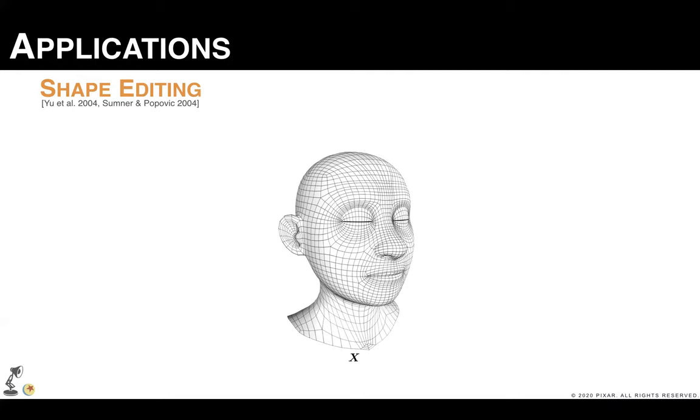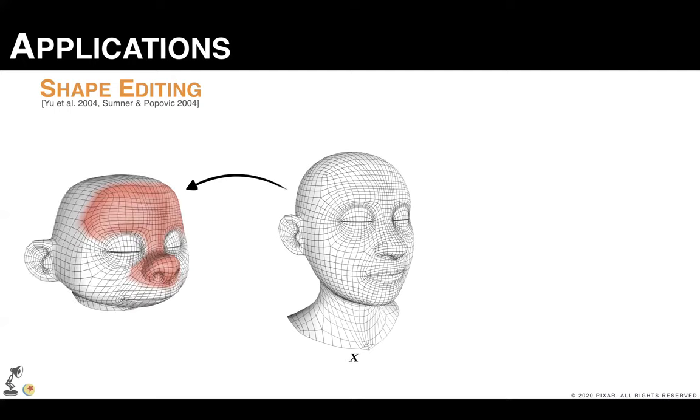Now, let's see some applications. We start with shape editing. Here we have a rest mesh with points X, and our goal is to blend this shape towards another pose. To do so, we set a Jacobian matrix J per face of the polygonal mesh. And this matrix indicates the amount of transformation that each face should receive.